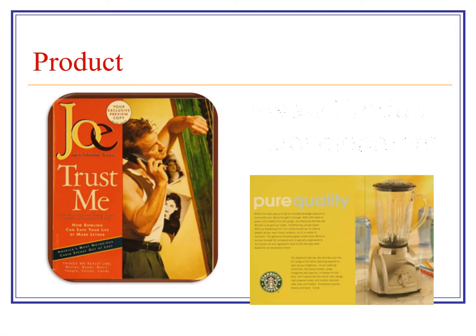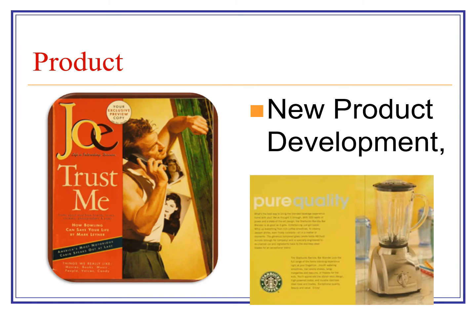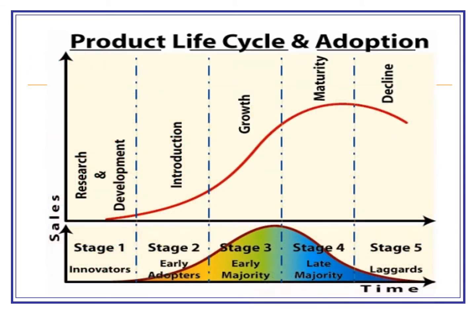Looking here at new product development. An example on the left from Starbucks, who launched a magazine that didn't last too well, and also a coffee maker or orange juice maker. They were always trying — they always knew that just because you're successful with one product doesn't mean you can rest on your laurels. Firms are always looking for new products and new ideas to help them move on and avoid standing still.